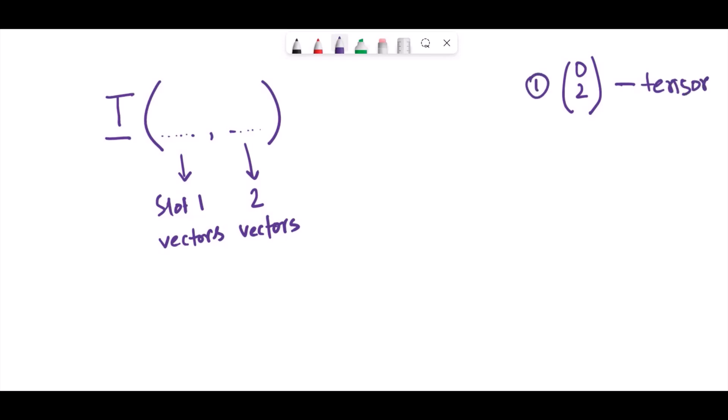And then number 2 would be that these two slots are interchangeable, and T does not depend on that. So, not only is this machine linear, but it is also symmetric. Symmetric in its two inputs, and in those inputs you can plug in vectors.